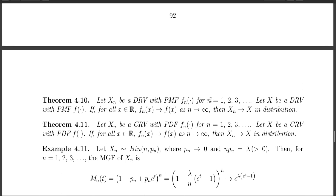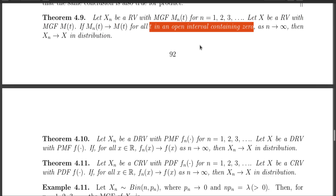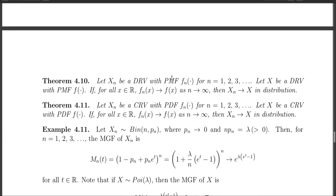These three theorems give us a way to show convergence in distribution: if the moment generating function converges to the moment generating function, or if the PMF converges to the PMF, or if the PDF converges to the PDF, in all cases we can conclude distributional convergence. When using the moment generating function, the pointwise convergence has to be true for all t in an open neighborhood around the point 0. For PMF and PDF, this pointwise convergence has to be true for all points in R.